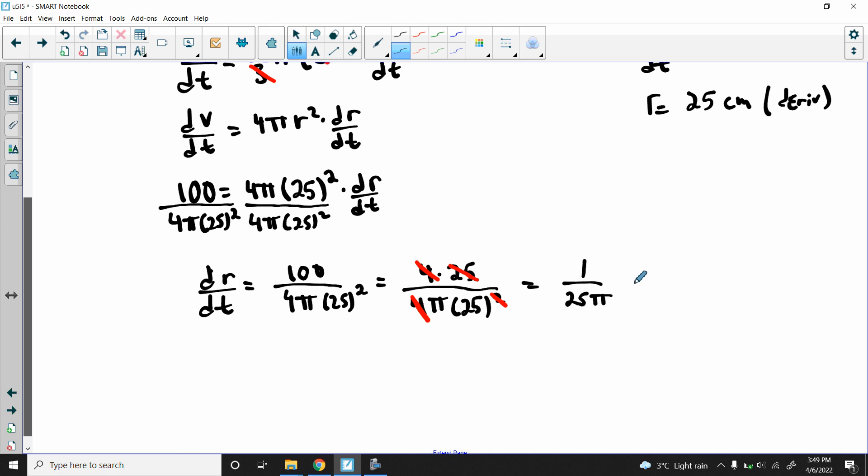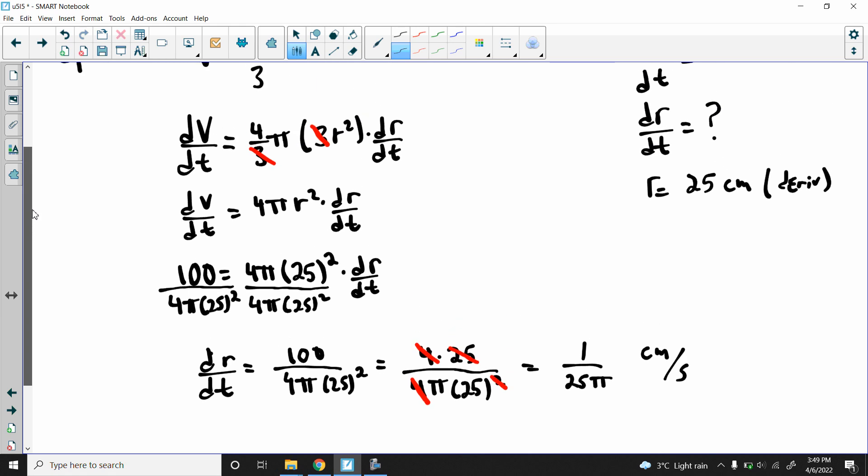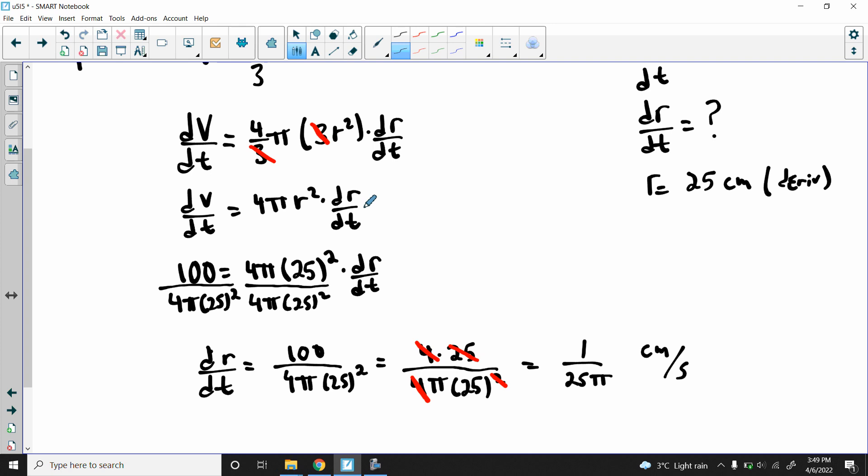That would be the units for that. Our radius is in centimeters and time is in seconds, so that's what we end up with: 1 over 25 pi centimeters per second. That's our first example. So I'll stop the video there and I'll do another one for the next example.